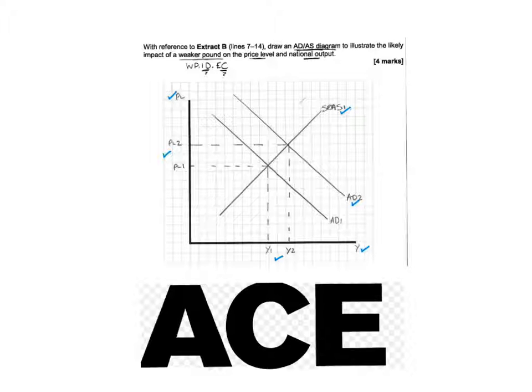And we can tell that because of what's happening to national output or national income. We can see that Y1 here has shifted to Y2. And when there's that taking place, we can see that there's an increase in price level 1 to price level 2.